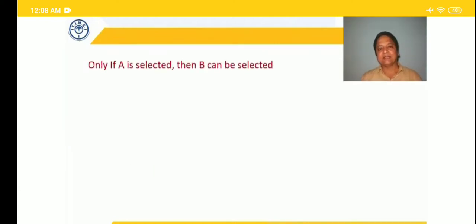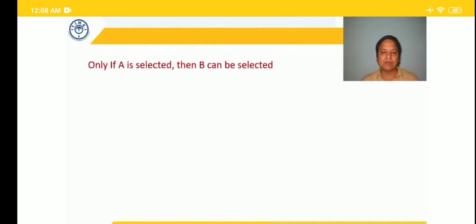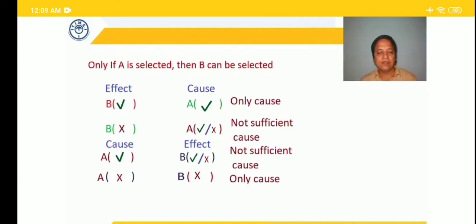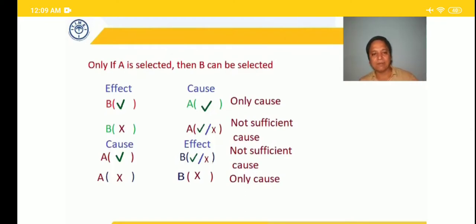The second type of statement is: 'only if A is selected, then B can be selected.' Here the effect is selection of B and the cause is selection of A. The difference from the previous one is 'only if' — for the effect B to be selected, there is only one cause: selection of A. So if effect happens, cause could also occur because this is the only cause. Whenever B is there, A will also be there. If effect doesn't happen — B is not selected — cause may or may not happen as it is not a sufficient cause.